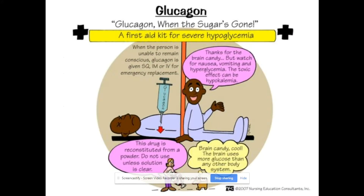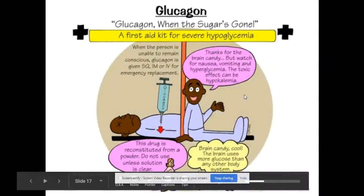Glucagon is described as 'glucagon when the sugar is gone' — a reminder of why we give it. It is a first aid kit for severe hypoglycemia. When the patient is so hypoglycemic they appear comatose or passed out, you give glucagon sub-Q, IM, or IV. The brain is very sensitive to glucose levels, which is why patients seem unresponsive with low glucose. Recovery can be very quick with treatment. Note that this drug is reconstituted from a powder — do not use the solution if it isn't clear after mixing.